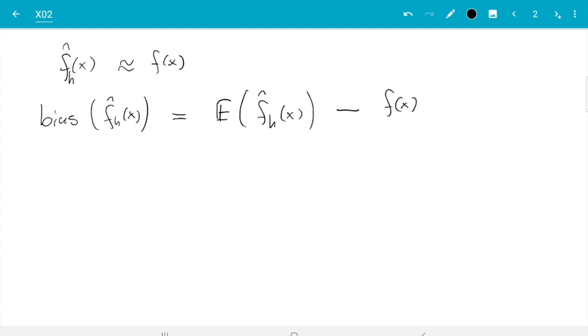And the only thing we need to be careful about here is even under the model where we have random data, this x is not random. It's the samples capital X1 up to capital Xn which are random, which will show up in a second. So that x here stays the lower case x.